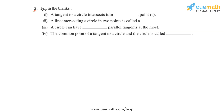In question two of this exercise, we have to fill in the blanks for each of the four given statements. The first statement says a tangent to a circle intersects it in blank points — basically asking how many points a tangent intersects a circle in.